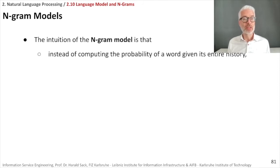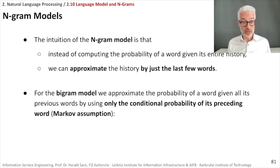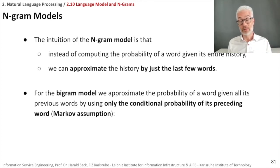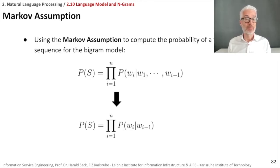The intuition of the n-gram model is that instead of computing the probability of a word given its entire history, we approximate the history by just the last few words. For a bigram model — two grams — we approximate the probability of a word given all previous words using only the conditional probability of its single preceding word. This is the Markov assumption, which greatly simplifies computation and approximates a language model quite well.